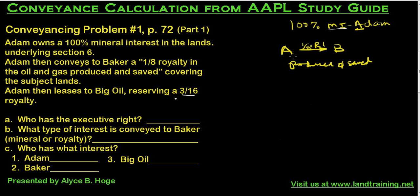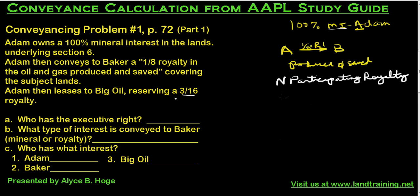What Adam is saying is: 'Baker, I'm going to give you this one-eighth royalty if I ever lease this property, and if they give me a royalty I'm going to give you one-eighth of that royalty.' This is known as a non-participating royalty interest, frequently abbreviated as NPRI.